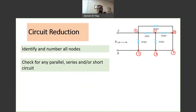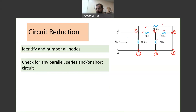Step 2: check for parallel, series, or short circuit. For series, two elements must share one node and nothing else shares that node. In node 1 we have 3 elements, in node 2 we have 3 elements, and in node 3 we have 3 elements. There is no node shared by exactly 2 elements with nothing else sharing it, so there is nothing in series.